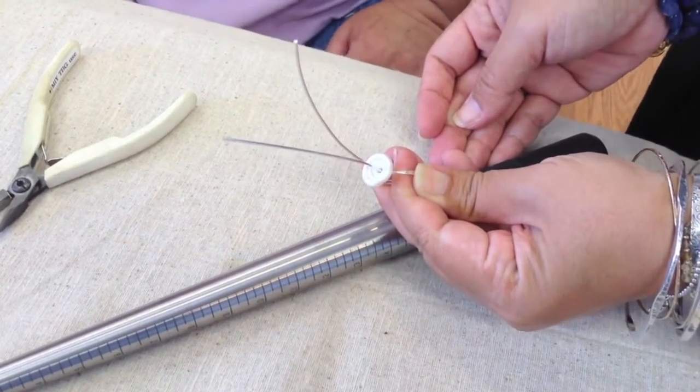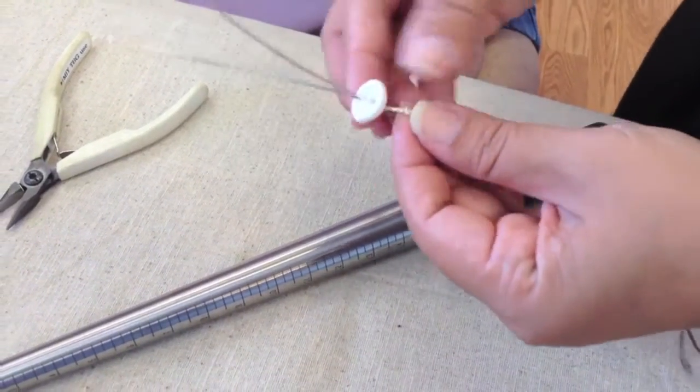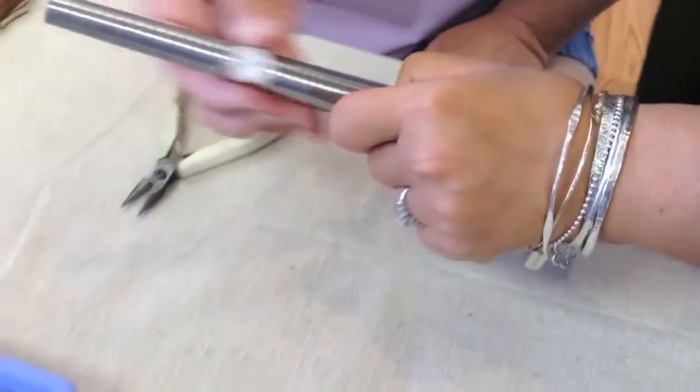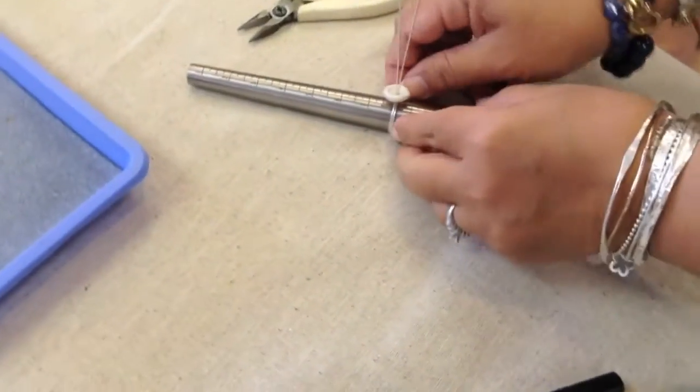With the puka shell on the ring, put the ring back onto the ring mandrel and we will start to turn the wires to lock it in.